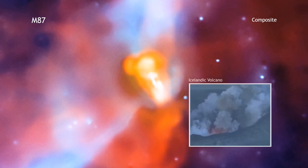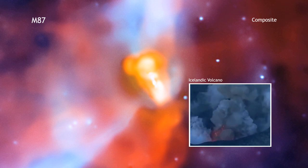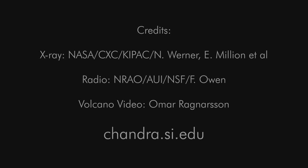The comparison between the black hole in M87 and the volcano in Iceland shows that even though astronomical phenomena occur in exotic settings and over huge scales, the physics can be very similar to events on Earth.